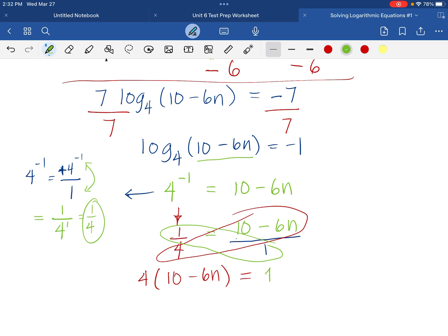We distribute 4. So, that would give us 40 minus 24n equals 1.